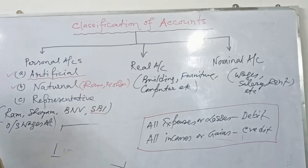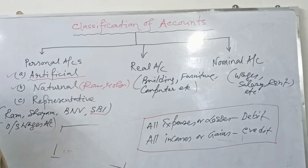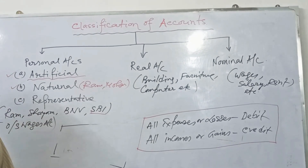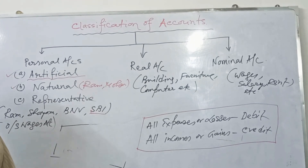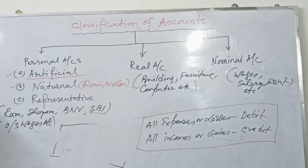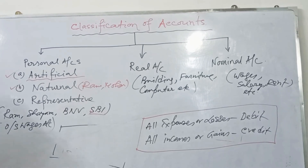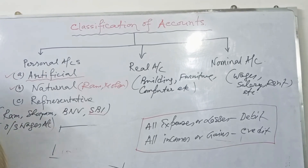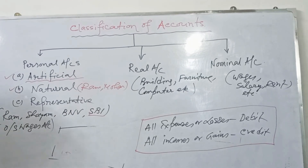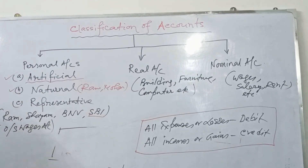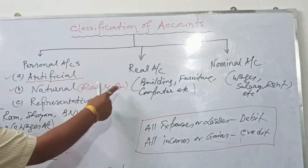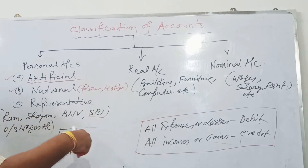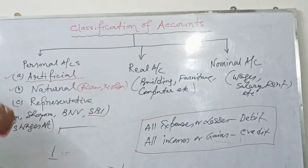Another example: wages paid, rupees 5,000. Two accounts are opened — wages account and cash account. Wages is a nominal account; it is an expense, so wages account is debited. Cash is a real account; the golden rule is what comes in is debited and what goes out is credited. In this case, cash goes out, so cash account is credited.